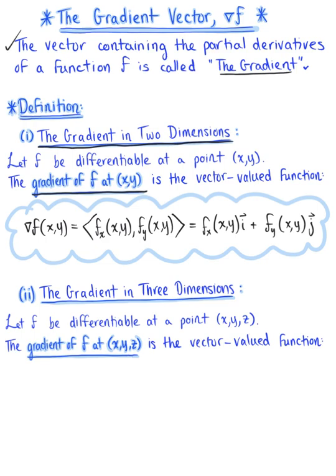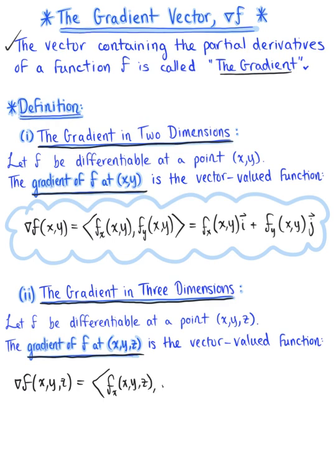The definition for the gradient vector in three dimensions is a natural extension of R2 — we simply need to add the z component. We let f be differentiable at some ordered triplet (x, y, z). The gradient of the function at this point is del f(x, y, z), which in component form has three components: the partial derivative with respect to x, the partial derivative with respect to y, and the partial derivative with respect to z, all evaluated at (x, y, z).